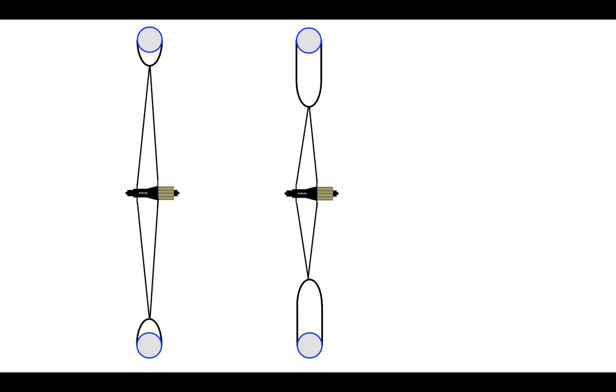We start with a graphic showing two wheels that are identical in every respect except for the depth of the carbon rim. The hubs are the same and the spokes are the same except for their lengths.